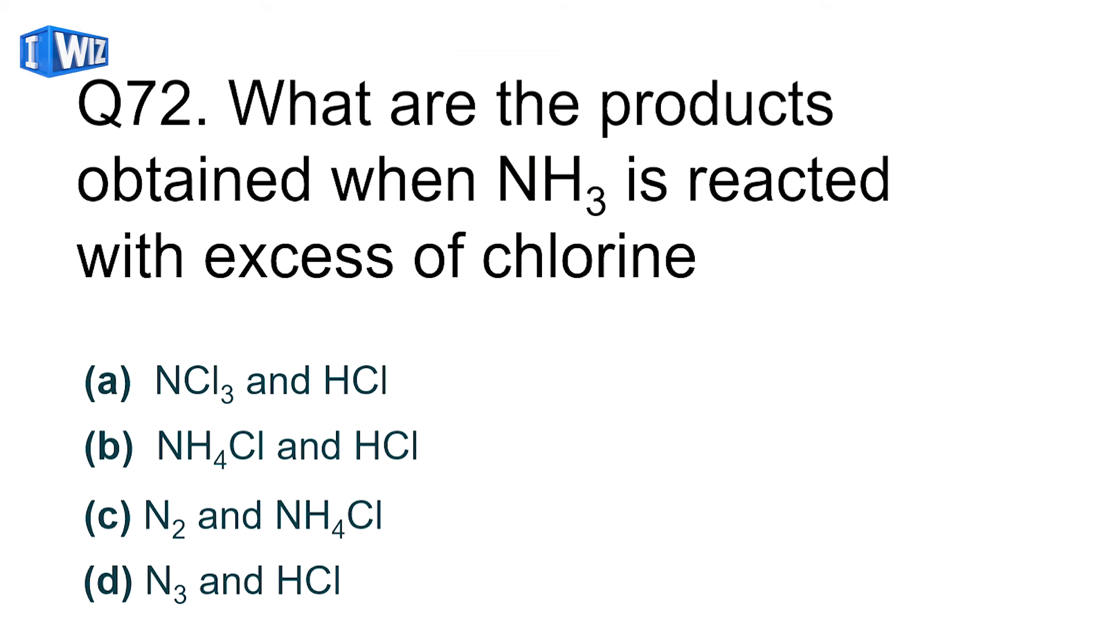What are the products obtained when ammonia reacts with excess chlorine? Ammonia and chlorine reaction gives NCl3 and HCl. You can see this reaction in NCERT.